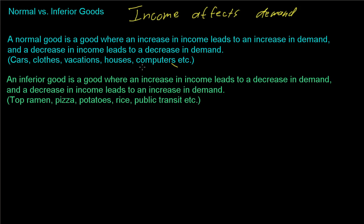Now we have inferior goods and an inferior good is the opposite of a normal good. An inferior good is a good where an increase in income leads to a decrease in demand. So this is saying if you get wealthier you buy less of it and a decrease in income leads to an increase in demand. So if you have less money you buy more of it.